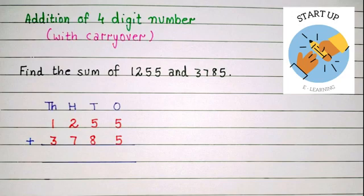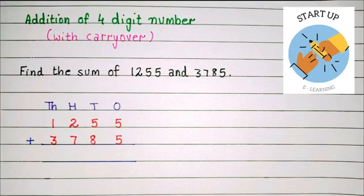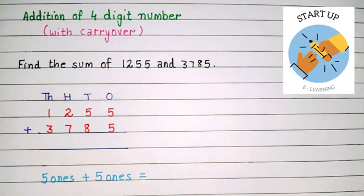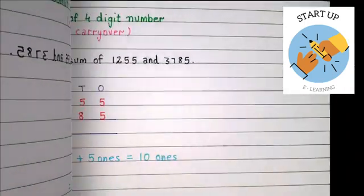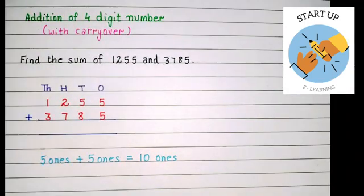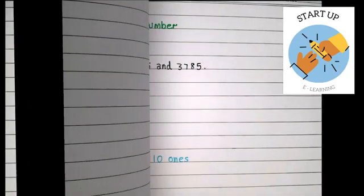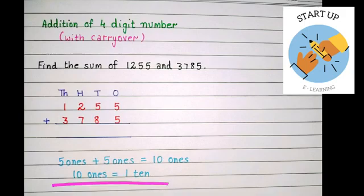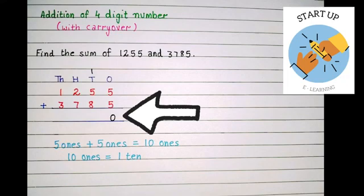So first of all we are going to start with ones place. 5 ones plus 5 ones. 5 plus 5 is equal to 10. So here it will become 10 ones. Children, 10 ones is also known as 1 ten. So we are going to write 0 under ones place under 5, and we are going to carry 1 on tens place.